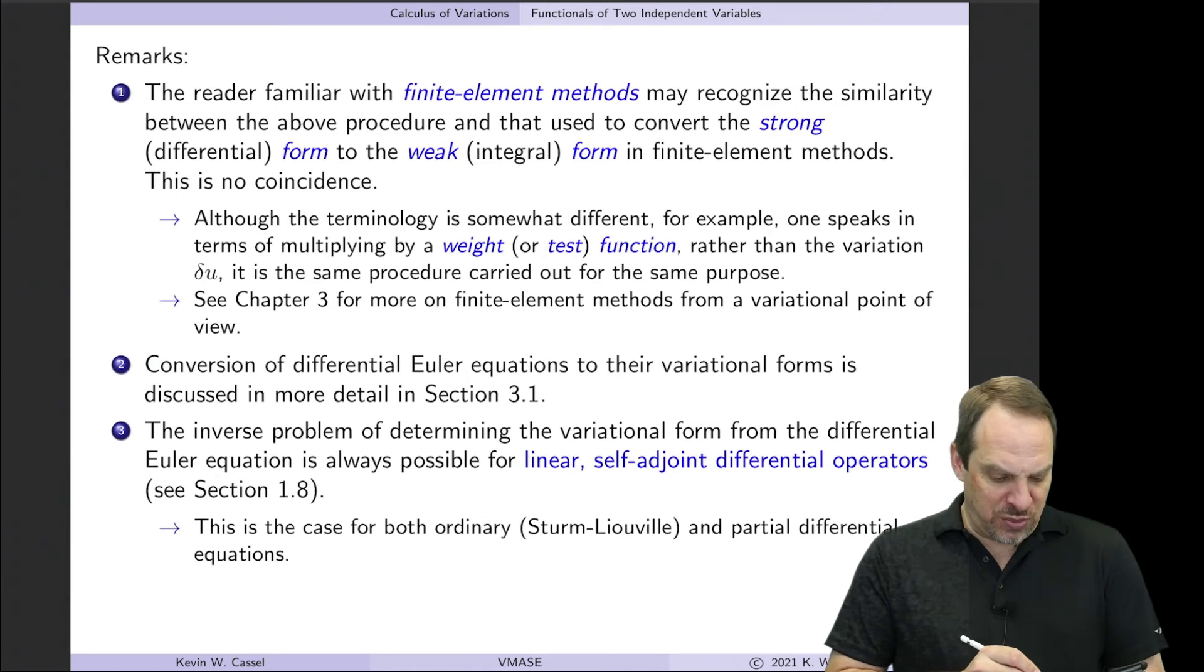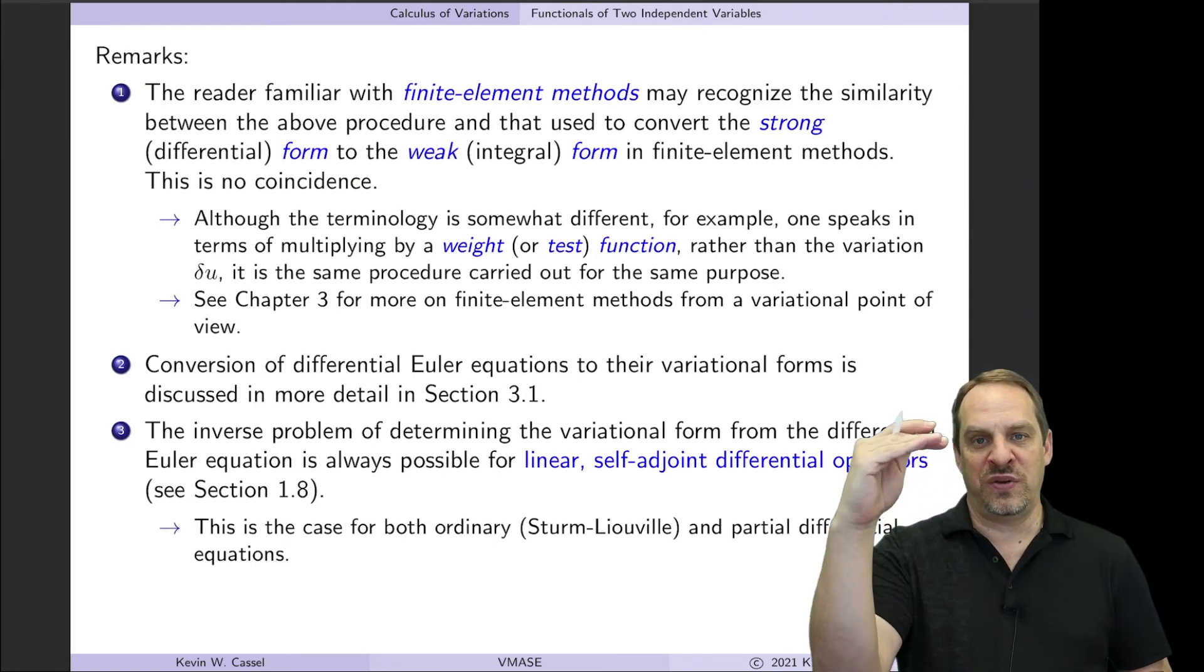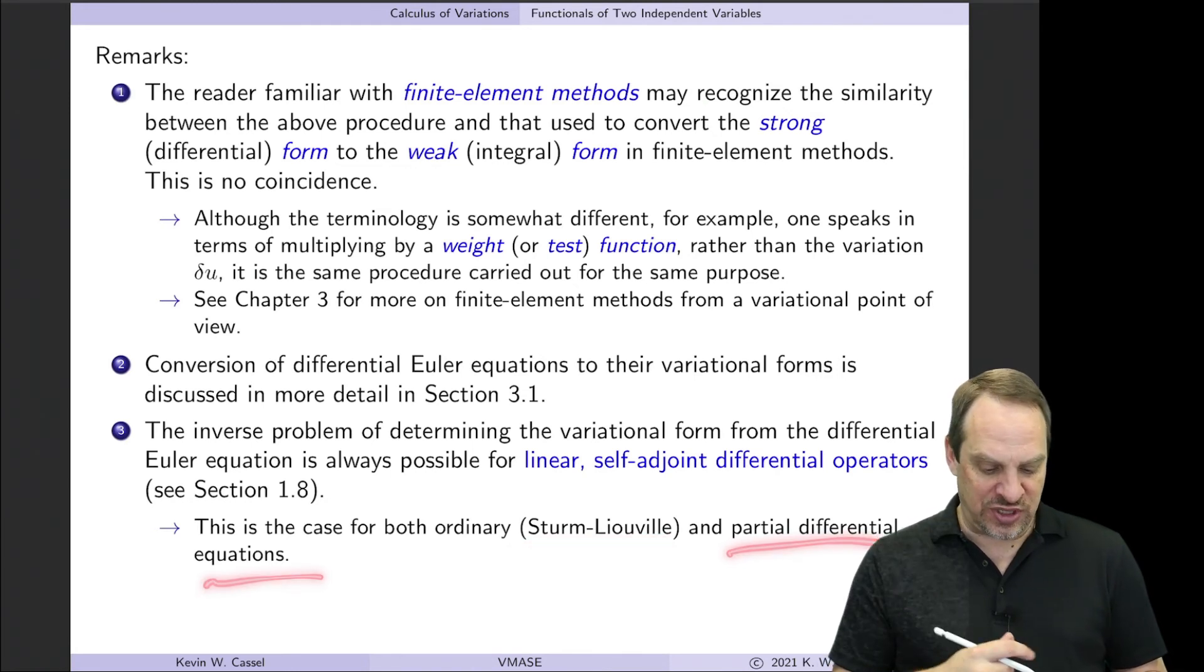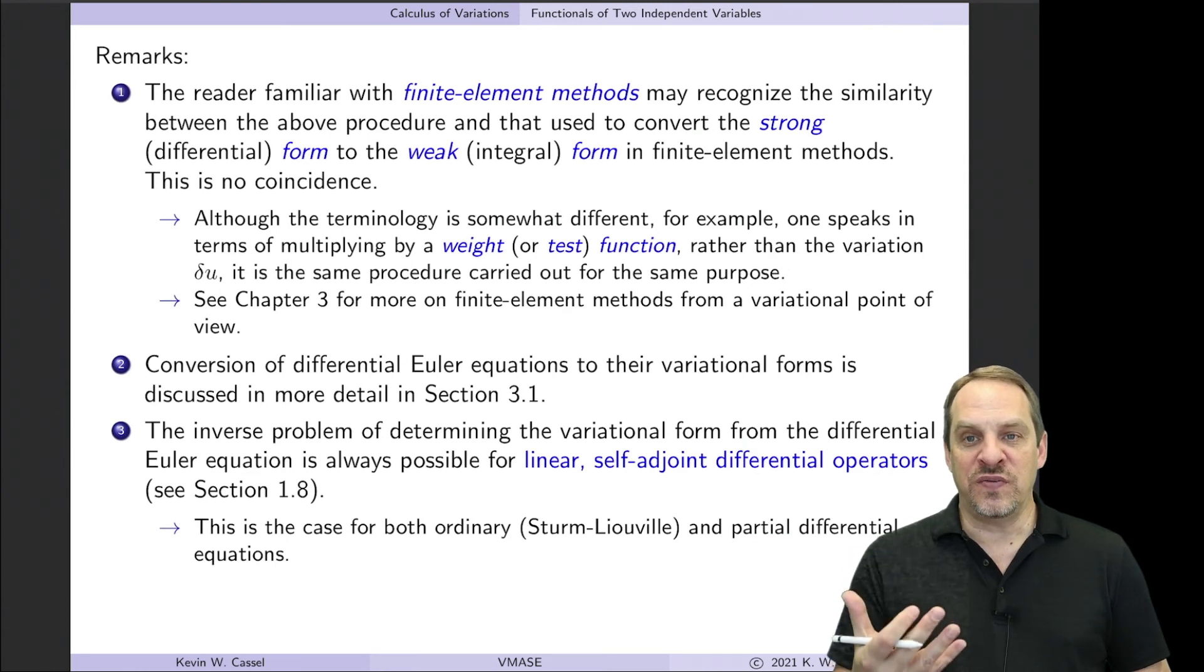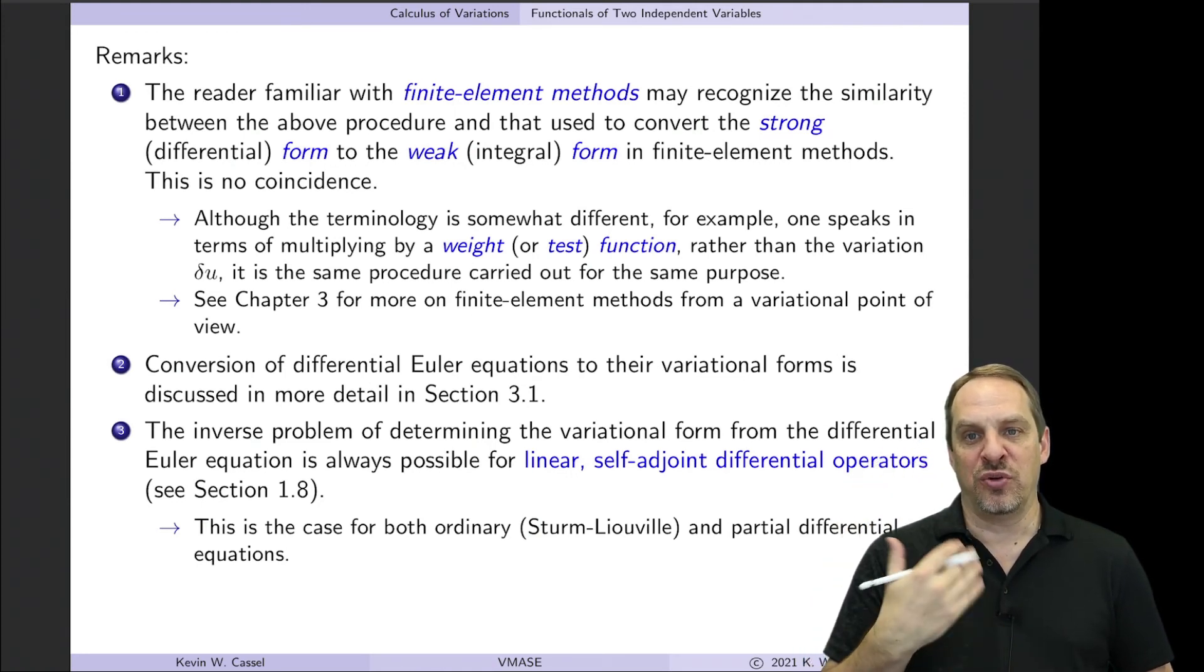Now this inverse problem can be done. In other words, you can go from the strong or the differential form all the way back to the weak variational form if your equation is linear and self-adjoint. So in the ODE case, that means it has to be of a Sturm-Liouville form. And if it's a partial differential equation, it has to be self-adjoint. If that's the case, then you know for a fact you can prove that the variational form or the weak form does exist.